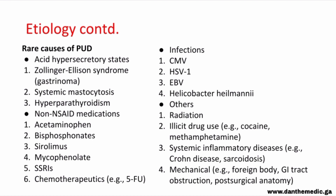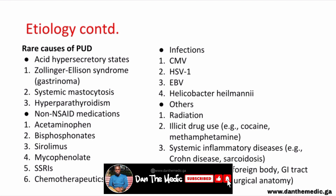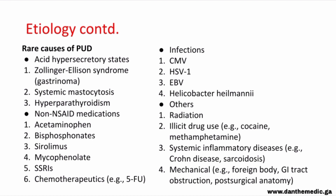For acid hypersecretory states, we have Zollinger-Ellison syndrome (gastrinoma), systemic mastocytosis, and hyperparathyroidism. Non-NSAID medications include acetaminophen/paracetamol, bisphosphonates, sirolimus, mycophenolate, SSRIs, and chemotherapeutics like 5-fluorouracil. Infections that are rare causes include cytomegalovirus, herpes simplex virus, Epstein-Barr virus, and Helicobacter heilmannii. Others include radiation, illicit drug use, systemic inflammatory diseases, and mechanical causes.